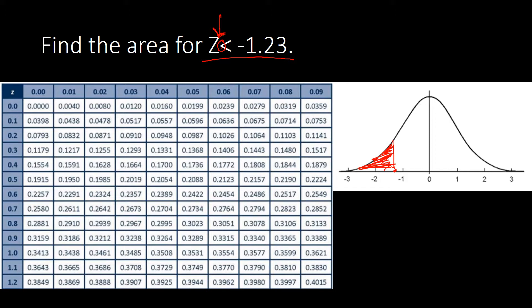Now, how do we get the area when it is located on the tail part? To avoid confusion, all you have to do is take note of the SSS and the OSA, which I introduced in my other videos. Check those out to see how to apply SSS and OSA, and when to apply each one.